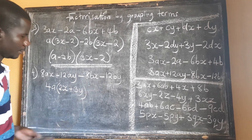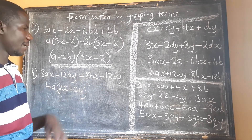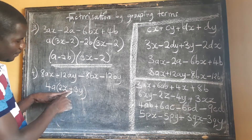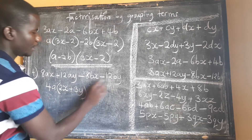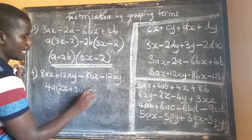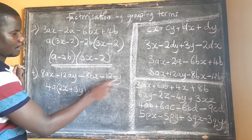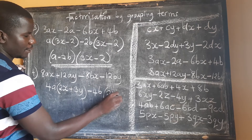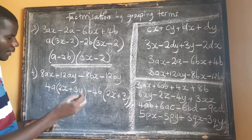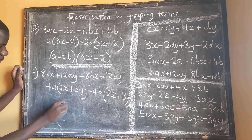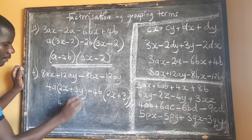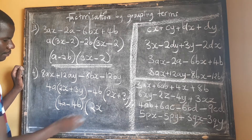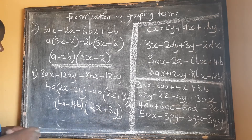For the second pair, we have a minus and a minus. To keep the same expression inside the bracket, we factorize out minus 4b. Four is the highest common factor of 8 and 12, and b is also common. Opening the brackets, we remain with 2x + 3y. So our answer at this stage is (4a - 4b)(2x + 3y).